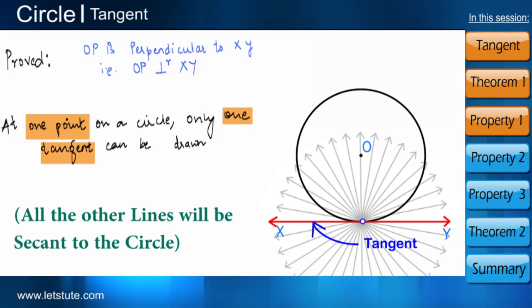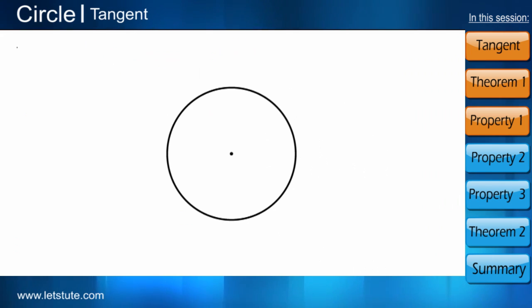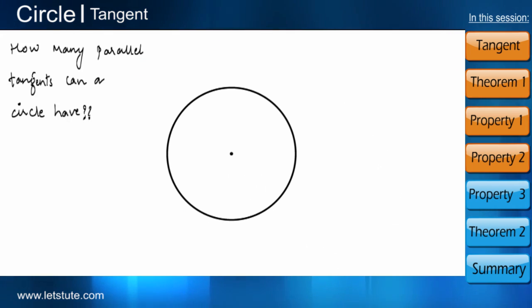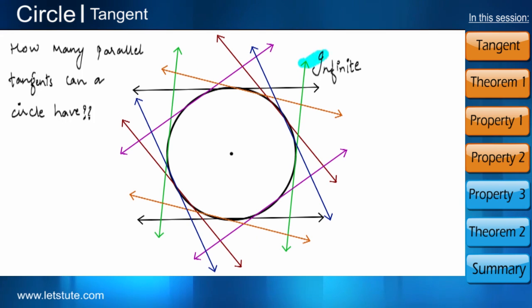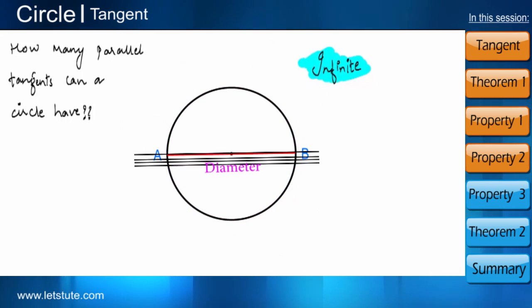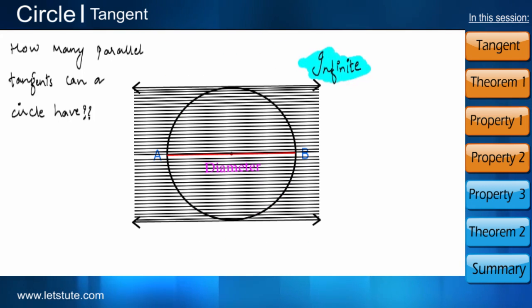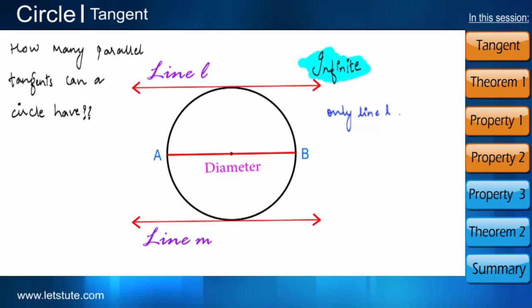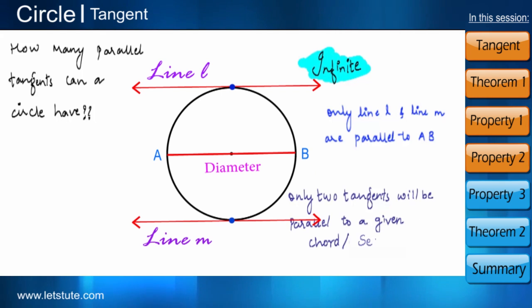So friends, let's do an activity here. How many parallel tangents can you draw in a circle? Again, the answer is infinite. But when we draw a diameter AB in the circle, then how many tangents will be parallel to AB? We can draw infinite parallel lines to the diameter, but there will be only two lines which will not only be parallel to the given diameter, but will also touch the circle at only one point. That is, to this diameter, we can draw only two parallel tangents.